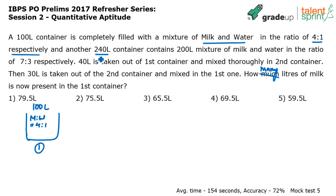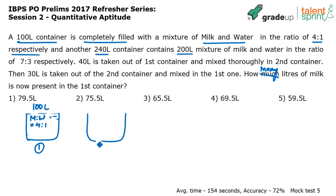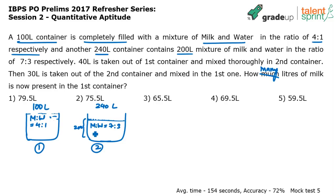There is another 240-liter container whose capacity is 240 liters, but it has been filled only up to 200 liters of milk and water in the ratio of 7 to 3. Container 1 is completely filled at 100 liters, but container 2's total capacity is 240 liters yet only contains 200 liters. This 200 can be divided in the ratio of 7 to 3.